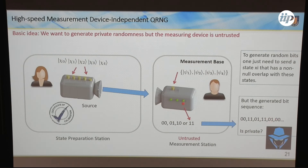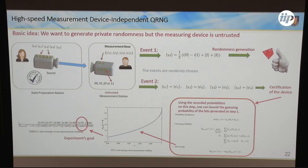The idea is to divide the protocol into two events. First, you send the state that will generate randomness. Then in the other event, you send the state which corresponds to each state of the benchmark basis. This is done randomly, so the adversary doesn't know when you are sending these different states. With this, we can certify the device — you can put an upper bound on the guessing probability. And if the visibility of the experiment is really high, you can generate more randomness than you would be able to do in a three-dimensional quantum system.